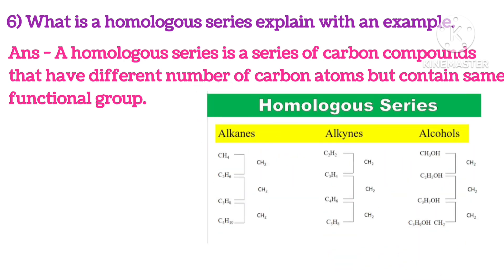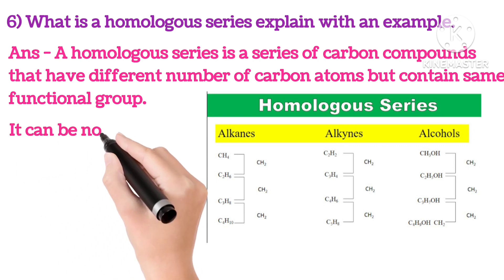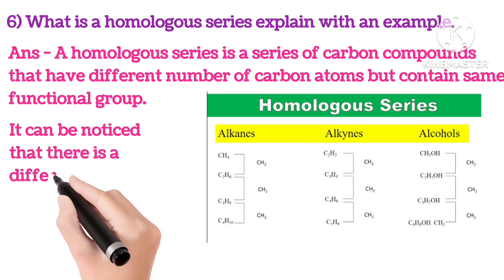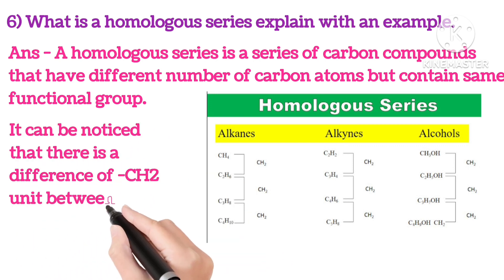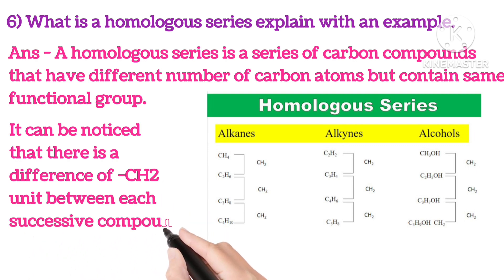For example, homologous series of alkanes having carbon atoms as 1, 2, 3, 4 are called methane, ethane, propane, butane respectively. Similarly, alkynes with carbon atoms 2, 3, 4 are called ethyne, propyne, butyne respectively. It can be noticed that there is a difference of CH2 unit between each successive compound.